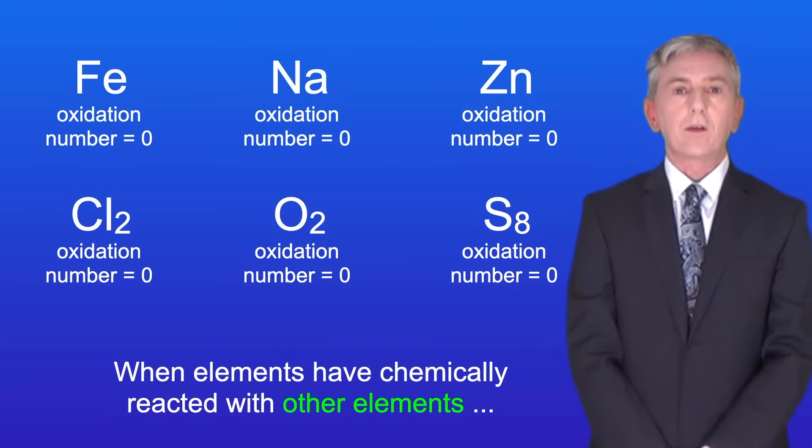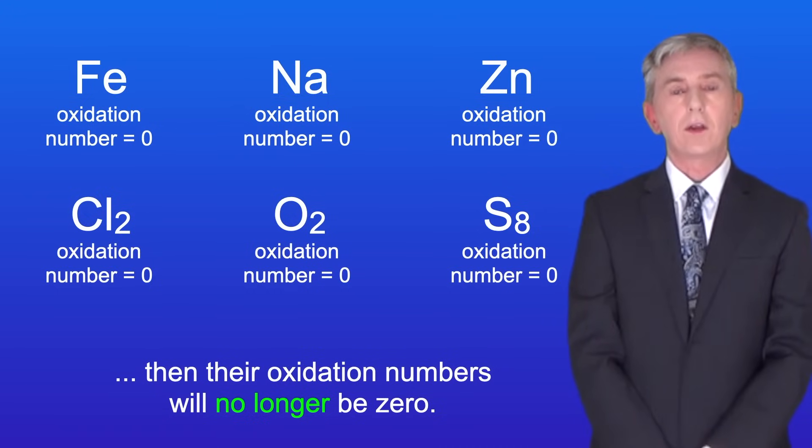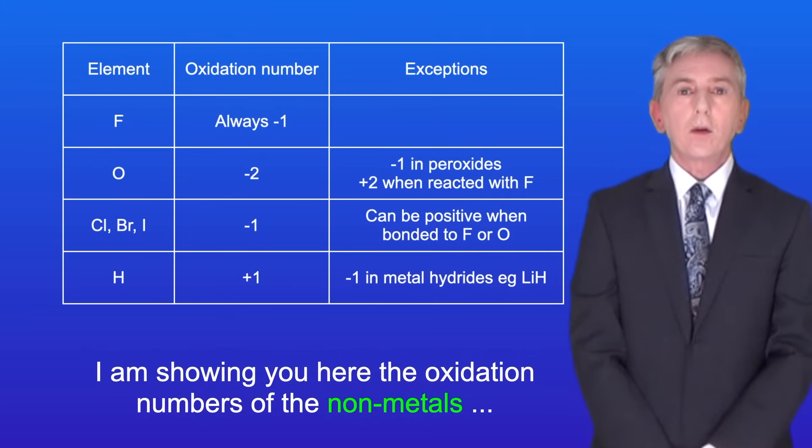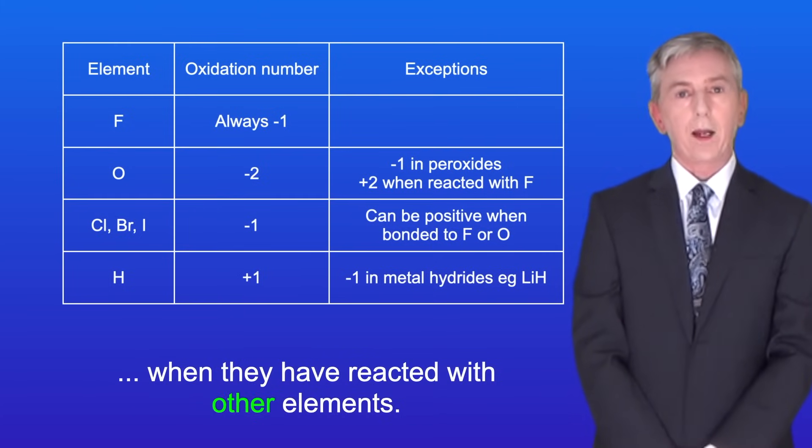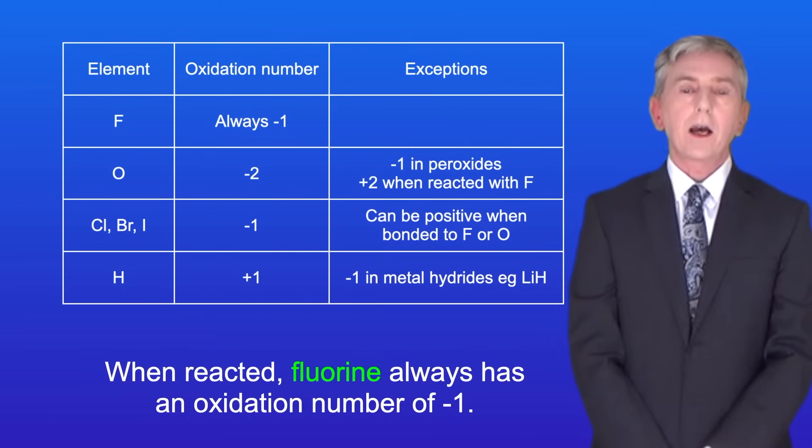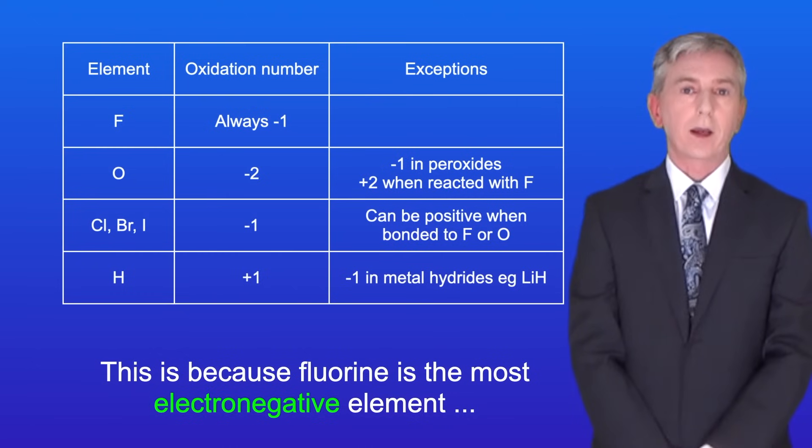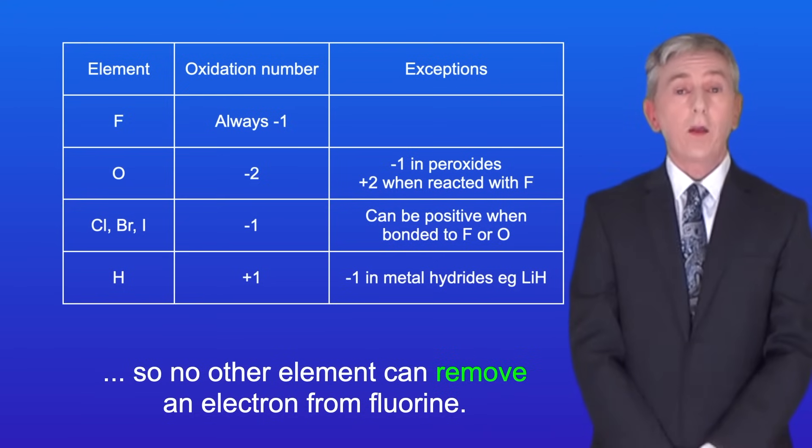Now when elements have chemically reacted with other elements, then their oxidation numbers will no longer be zero. I'm showing you here the oxidation numbers of the non-metals when they've reacted with other elements. When reacted, fluorine always has an oxidation number of minus one. This is because fluorine is the most electronegative element, so no other element can remove an electron from fluorine.